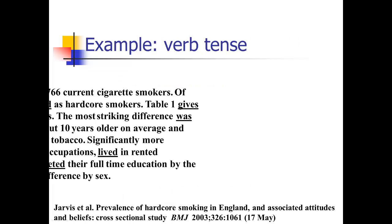Here's an example from a smoking study: 'Information was available for this many smokers. Of those, 1,216 were classified as hardcore smokers' — past tense for completed measurements, though notice the passive voice. Then we get 'table one gives' — switching to present tense, because the table is still giving those characteristics when the reader reads the paper. Everything else describing already-measured data is in the past tense.